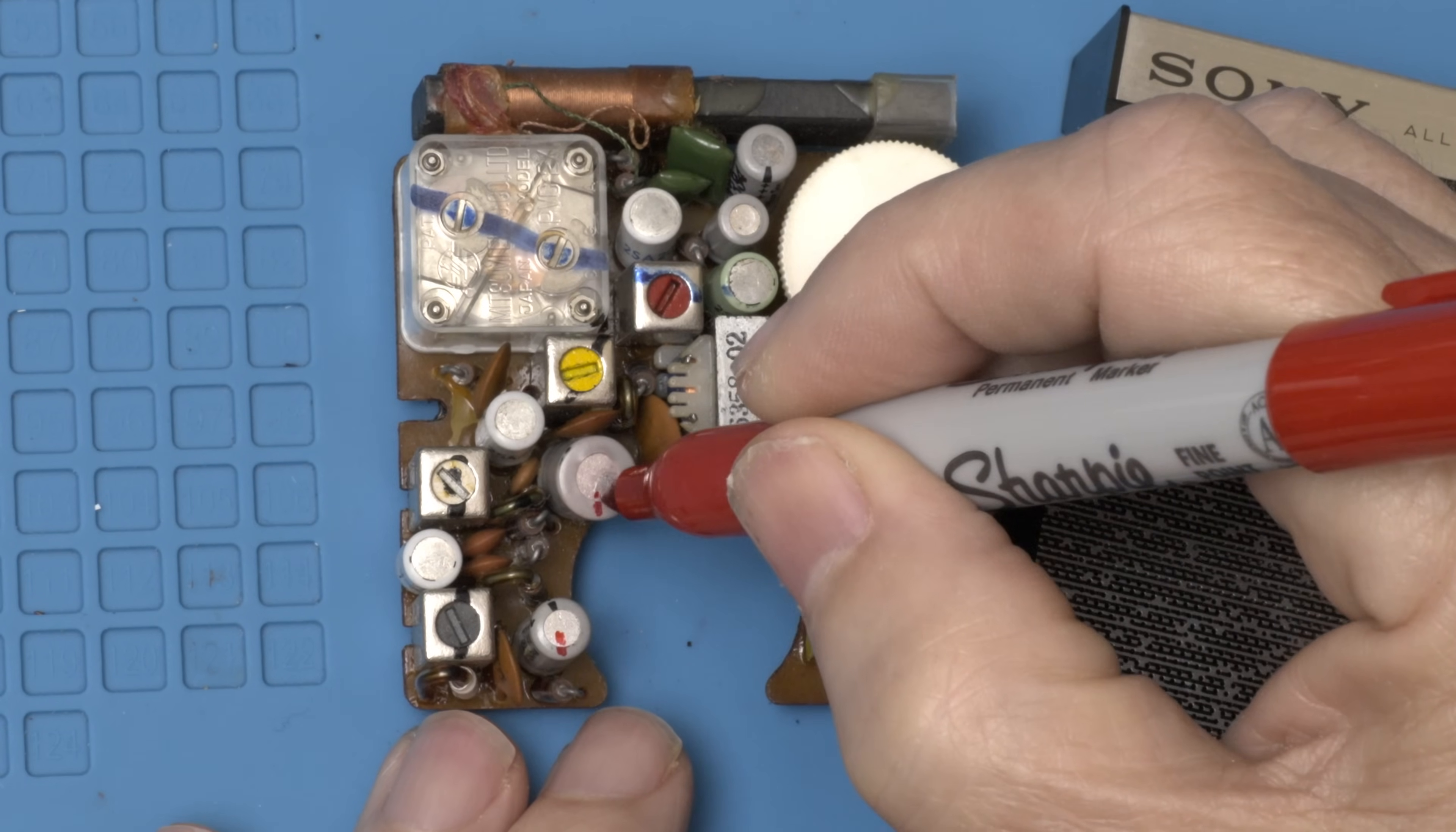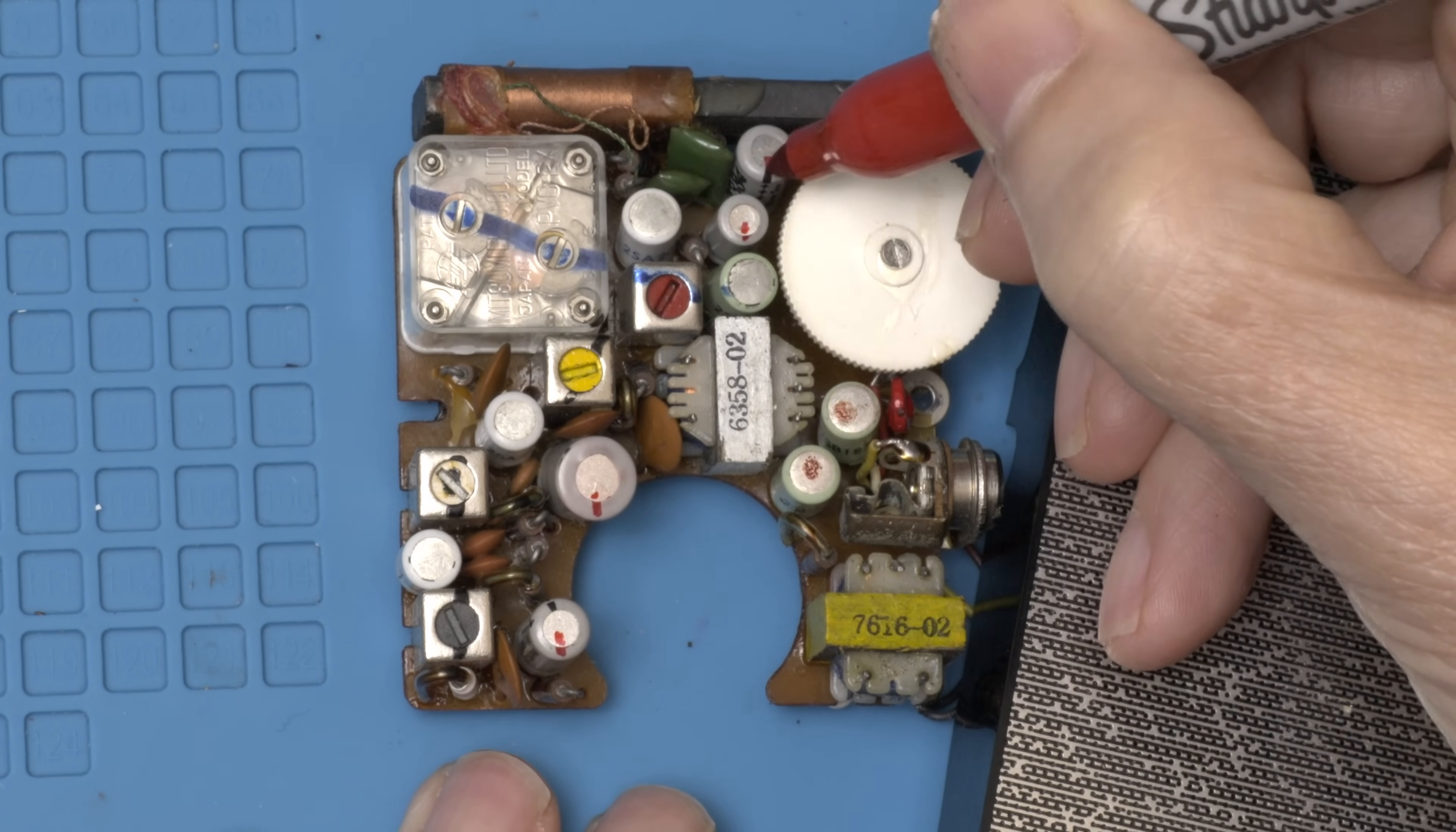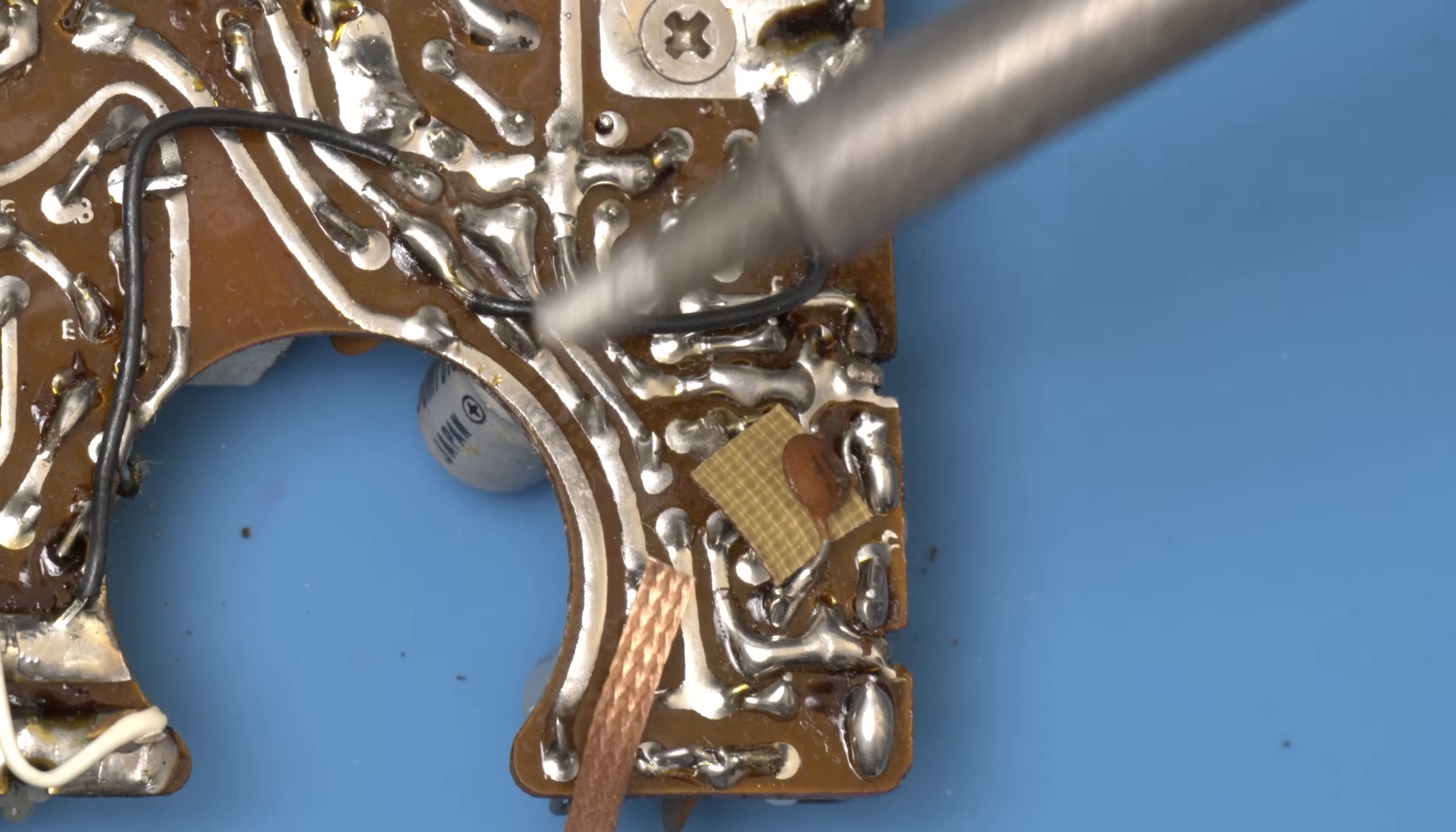Before we get started though, something I have learned to do is to mark the current orientation of the capacitors. That way when we pull them out we can keep track of where they once were in case they just fall to the ground or something. Let's get started.